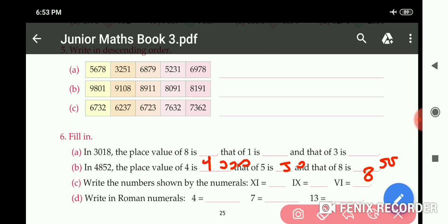Now part C: Write the numbers shown by the numerals. This is 11, this is 9, and this is 6. Write in Roman numerals, part D: 4, we write 4 like this. 7, like this. And 13: X, 1, 2, 3. 13 like this. Like this we have completed the review worksheet 1.